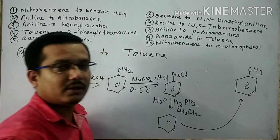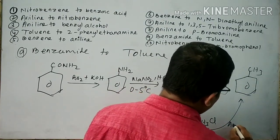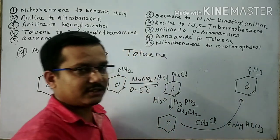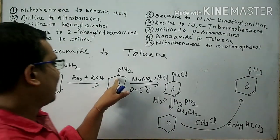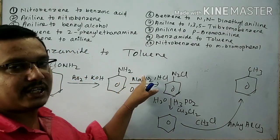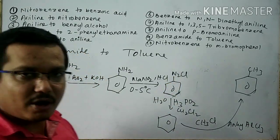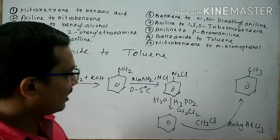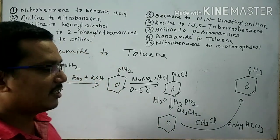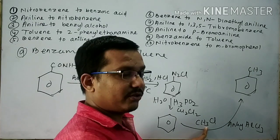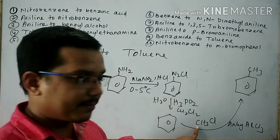Benzene is subjected to Friedel-Crafts alkylation — reaction with methyl chloride in the presence of anhydrous AlCl3 — and then toluene is formed. To repeat: benzamide undergoes Hofmann bromamide reaction to give aniline. Aniline reacts with NaNO2 and HCl at 0 to 5 degrees centigrade to give BDC. BDC reacts with H3PO2 and water in presence of CuCl2 to give benzene. Benzene undergoes Friedel-Crafts alkylation with methyl chloride to give toluene.